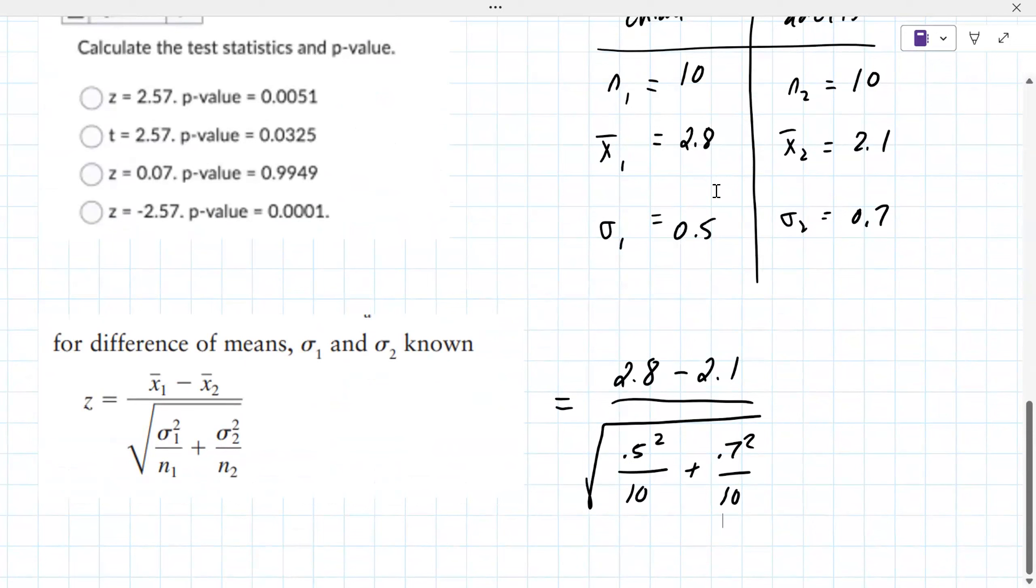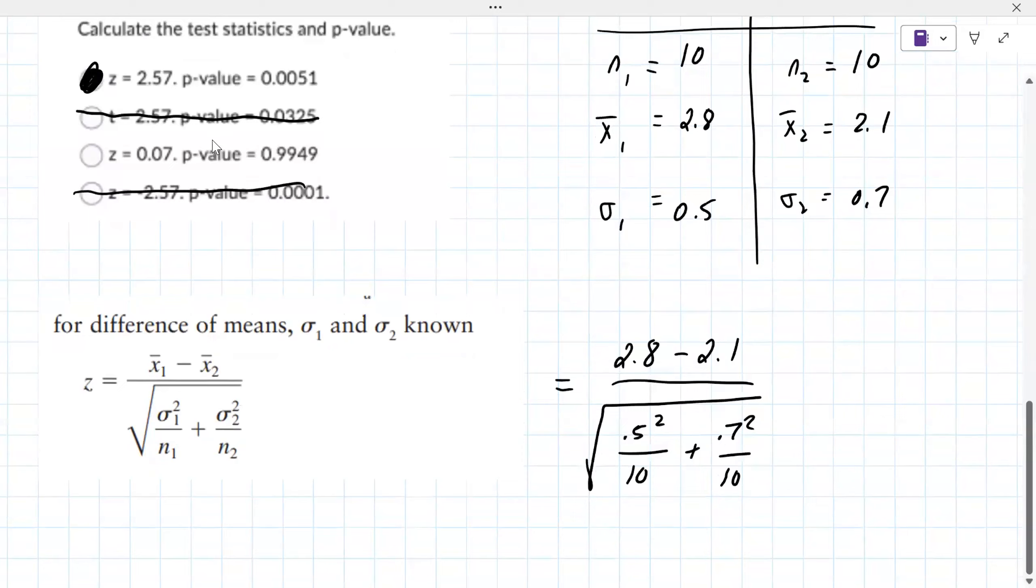You're putting these numbers in: 2.8 minus 2.1 over the square root 0.5 squared over 10 plus 0.7 squared over 10. These are the values from this table on the right. Some reasonableness - it's not T and it's not negative because 2.8 minus 2.1 is positive. So the Z value ends up being 2.57 and then the P value.